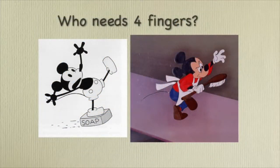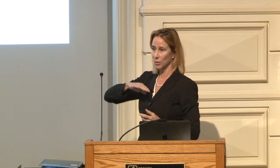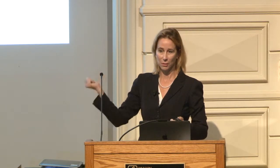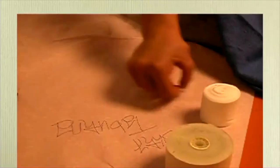Walt Disney, back in the day of hand-drawn cartoons, would do the storyboard and then in-between artists called tweeners would do the separate drawings and link them together. He made it the standard to have three fingers and a thumb because it was 20% fewer fingers to draw. So as a homage to Walt Disney, every cartoon character with a human-hand look has three fingers and a thumb.